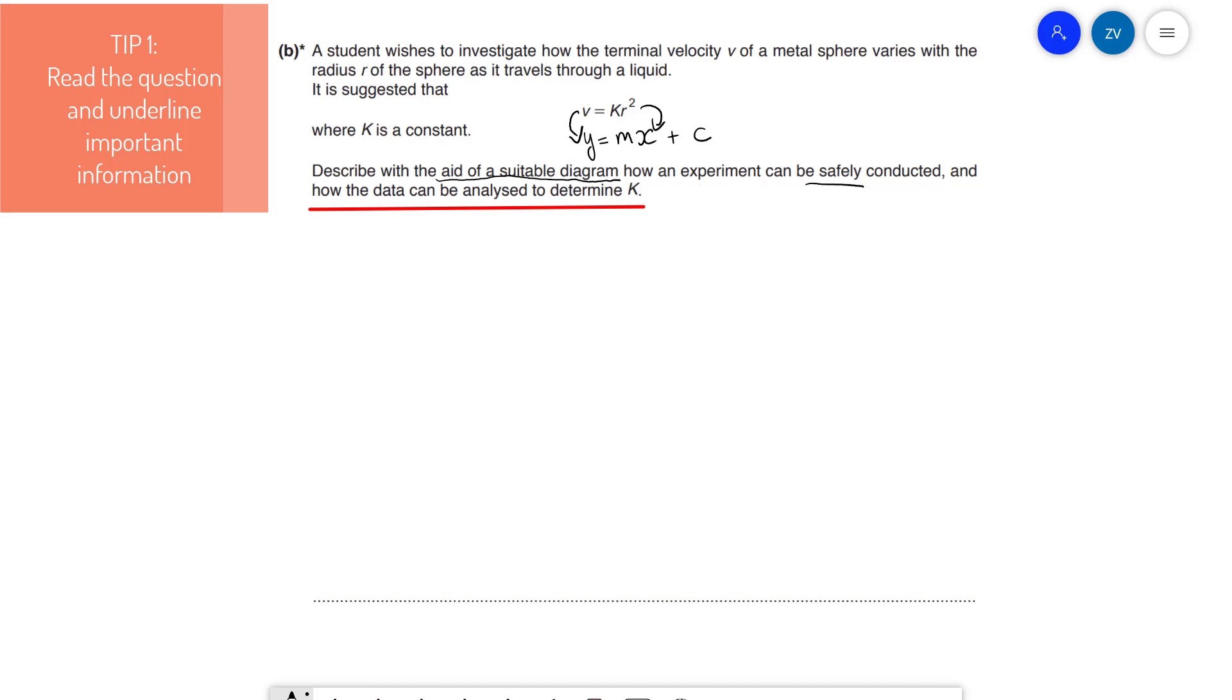We've already started actually doing that just by reading the question. I'm going to need to make sure that in my data analysis, I include some really important statements, such as if the graph is a straight line through the origin, that means that the linear relationship is correct, and to also include my Y equals Mx plus C analysis and explicitly say what quantity the gradient is.